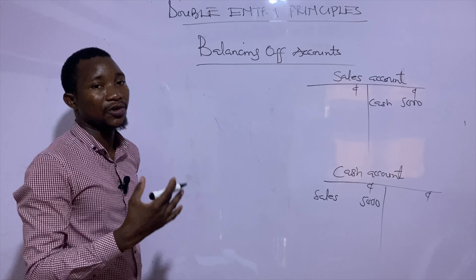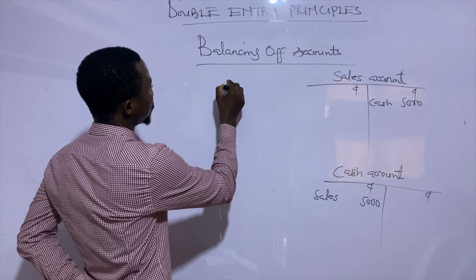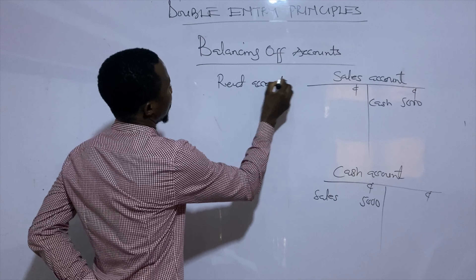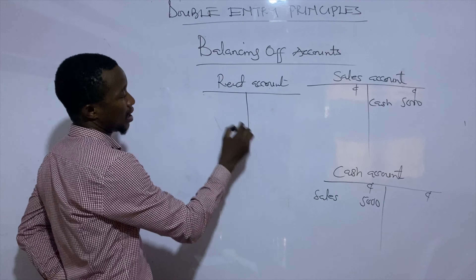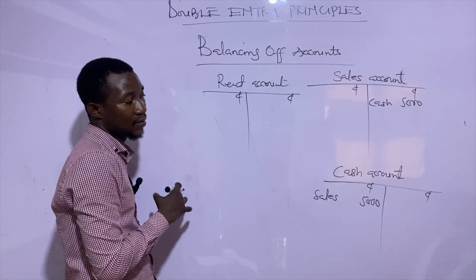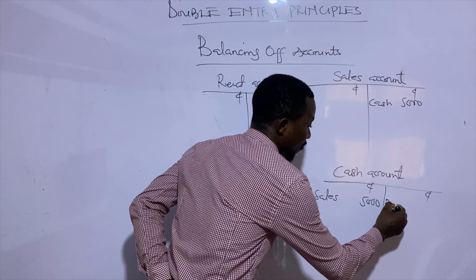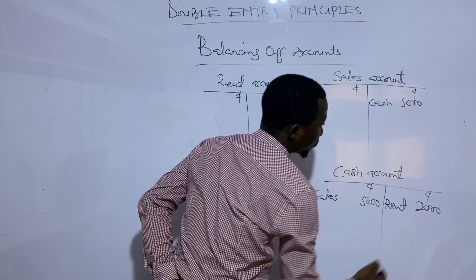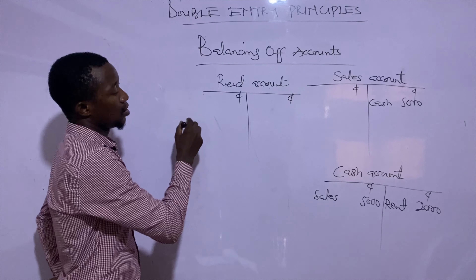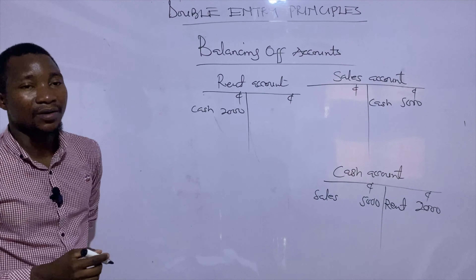There is another transaction: paid rent 2,000. We have a rent account and a cash account. When we paid rent, our cash is going out and we are paying for rent as an expense. Using the rule of a real account, we credit what goes out — so cash is credited in the name of rent for 2,000. Then we debit rent using the rule of nominal accounts, that is, we debit all expenses — in the name of cash for 2,000.